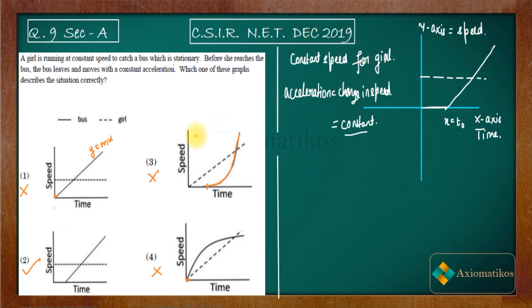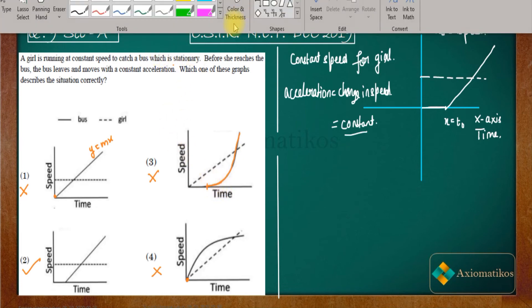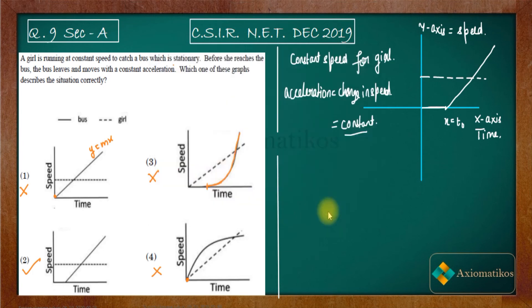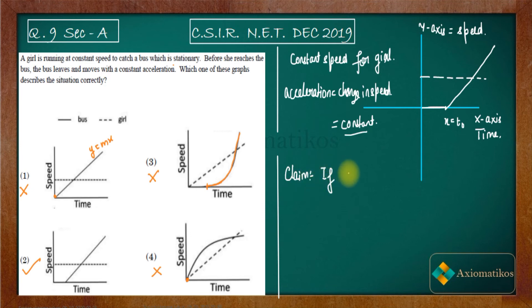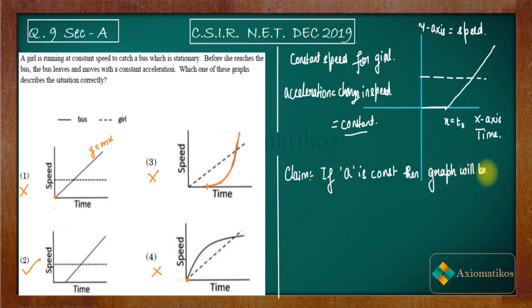The question is already done. Now let's think about why, if acceleration is constant, the graph must be a straight line. The claim is: if acceleration a is constant, then the speed-time graph will be a straight line.